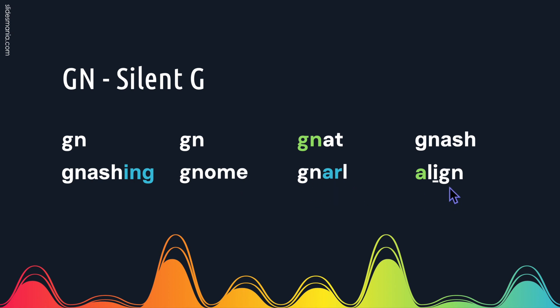Right here, this G-N will just have the sound of mm. The A is at the beginning of a word, and A at the beginning of a word often schwa's and takes on a muffled uh sound. This I will be long. So this word is align.